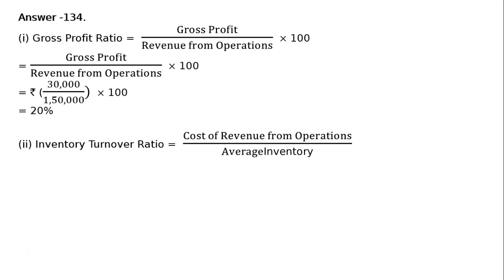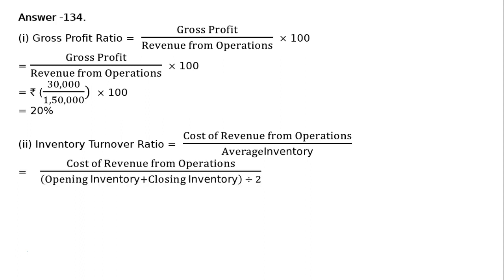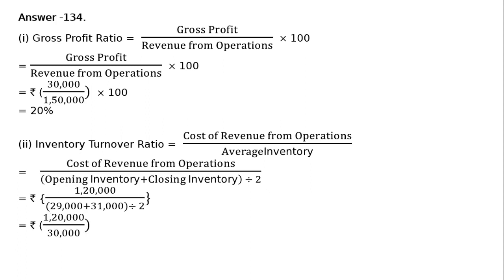Second one is Inventory Turnover Ratio, i.e. Cost of Revenue from Operations divided by Average Inventory. That is equal to Cost of Revenue from Operations divided by Opening Inventory plus Closing Inventory, whole divided by 2. That is equal to Rs. 1,20,000 divided by Opening Inventory Rs. 29,000 plus Closing Inventory Rs. 31,000, whole divided by 2. That is equal to Rs. 1,20,000 by 30,000. That is equal to 4 times.